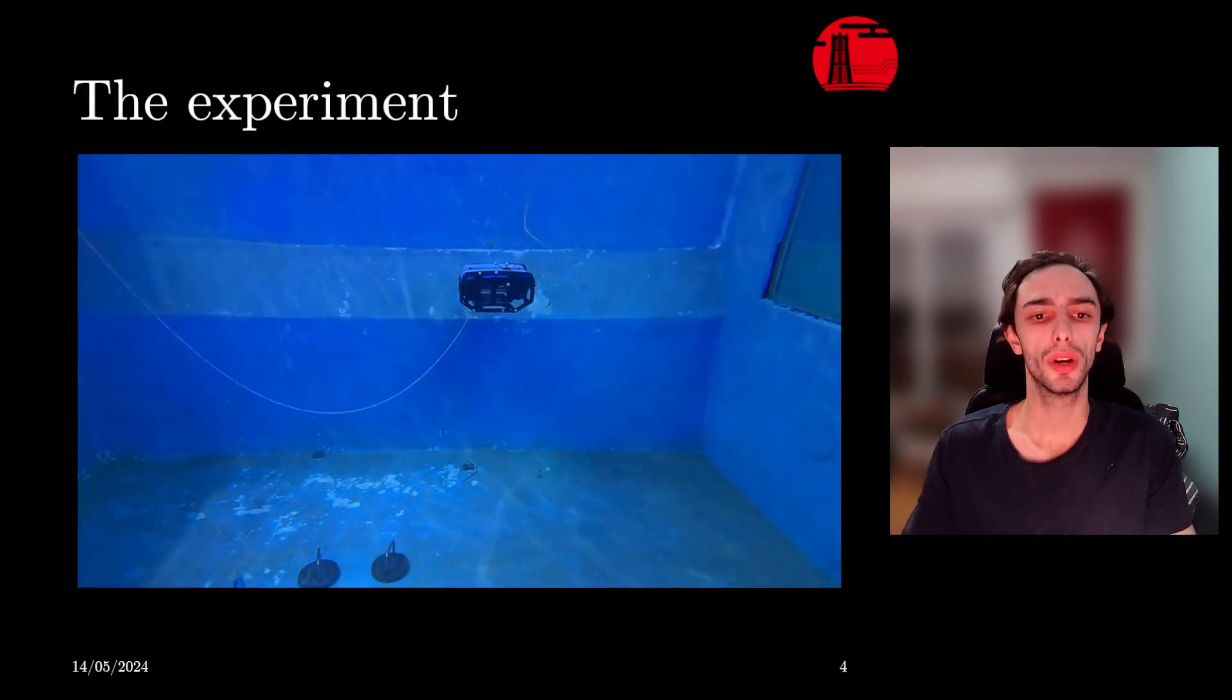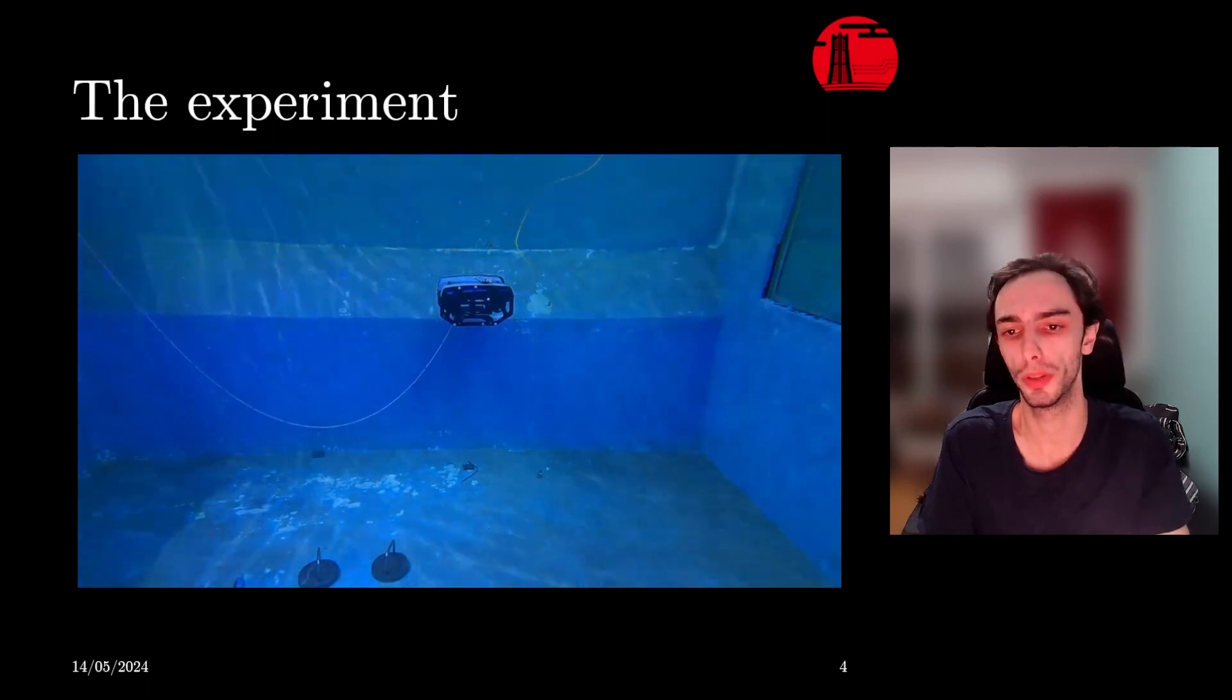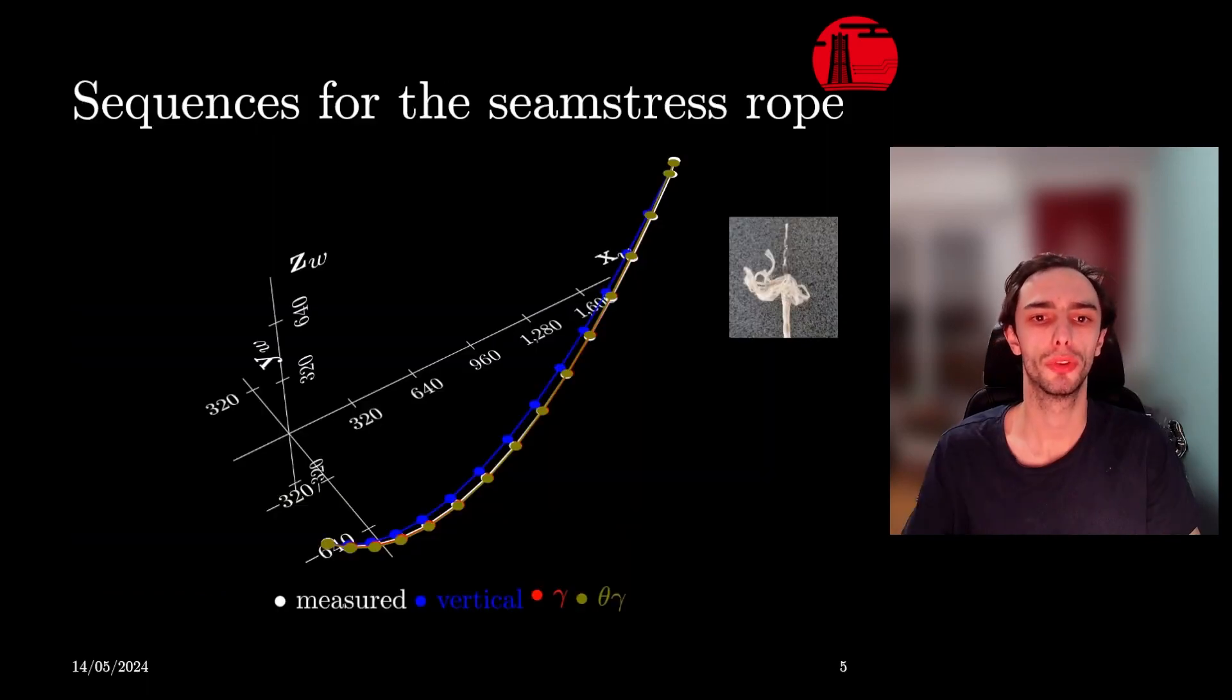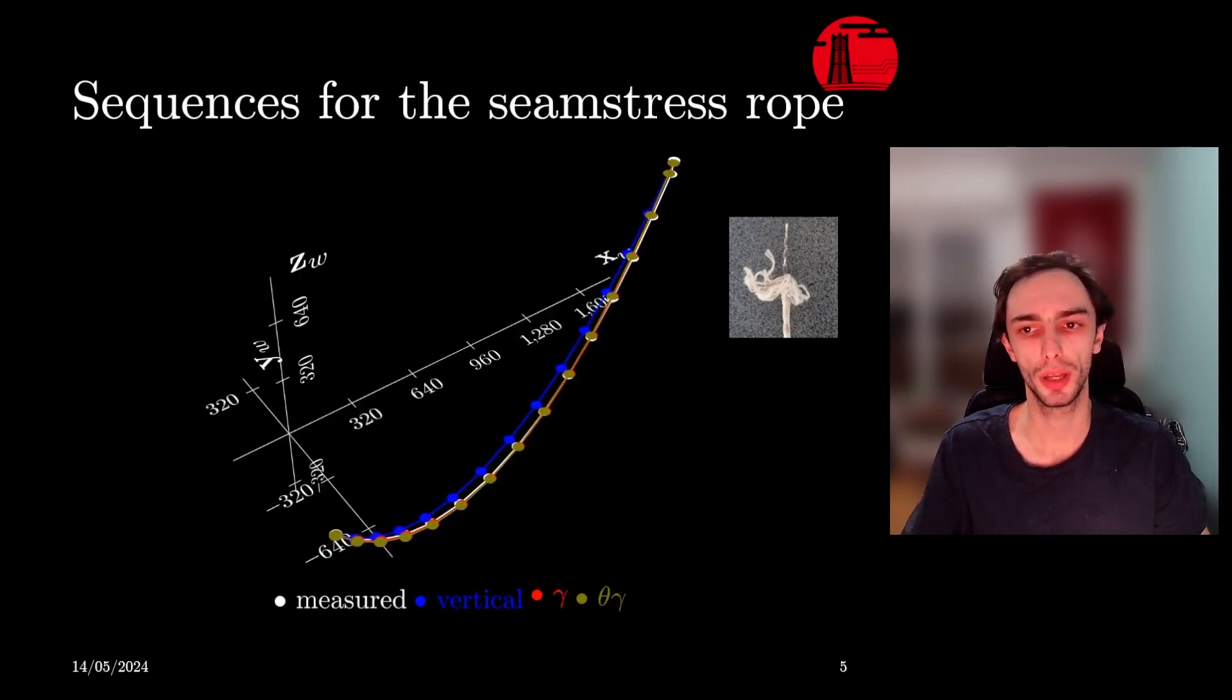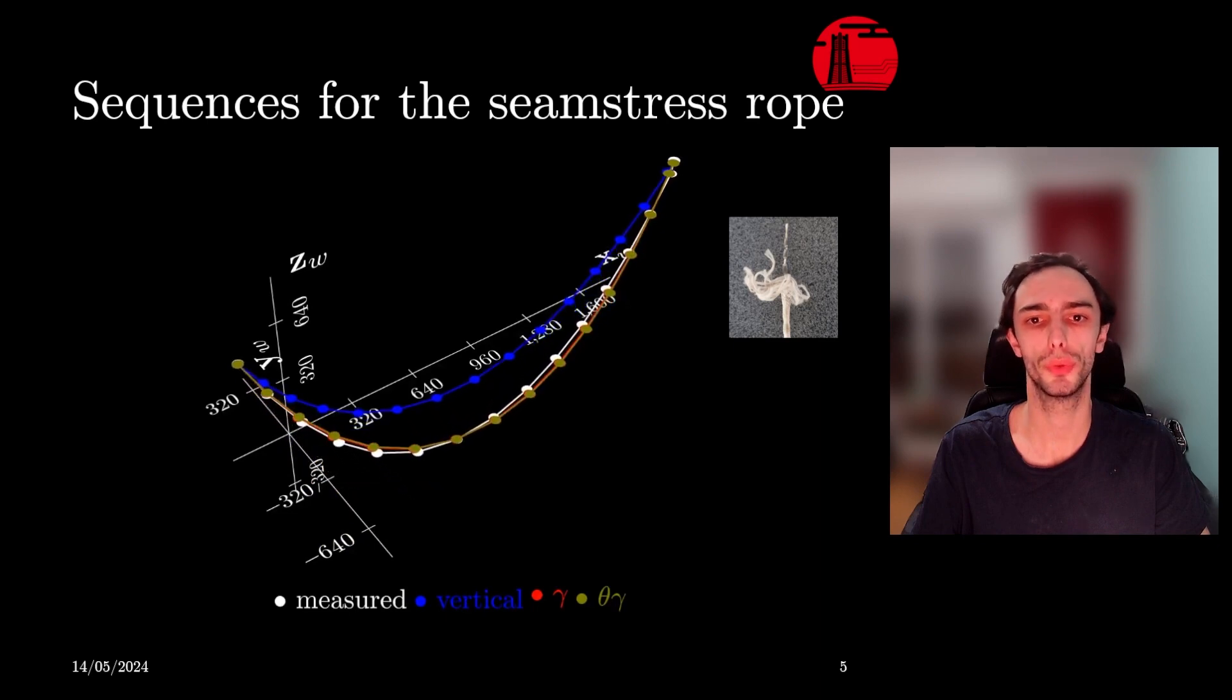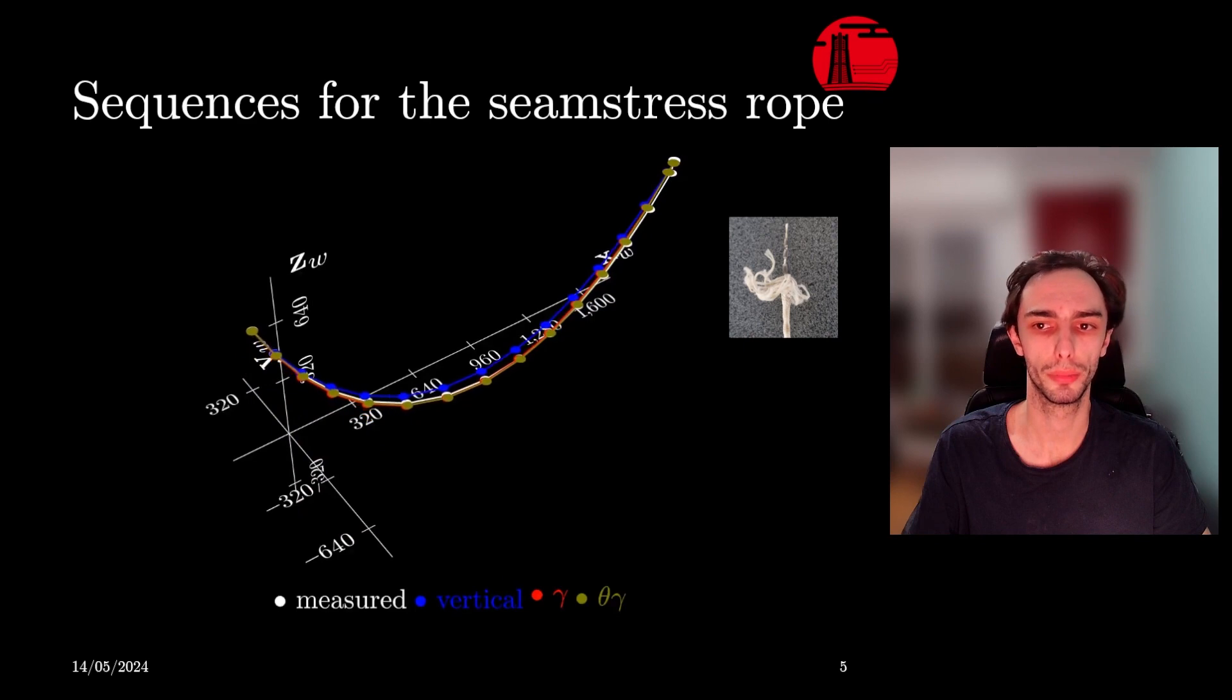To verify the accuracy of our model, we performed a series of experiments in a pool with a motion capture system. Here are some results with the seamstress rope. The measured data is in white and the model is in green. Red is with the surge degree of freedom disabled and blue is without any degrees of freedom, the vertical standard catenary model.